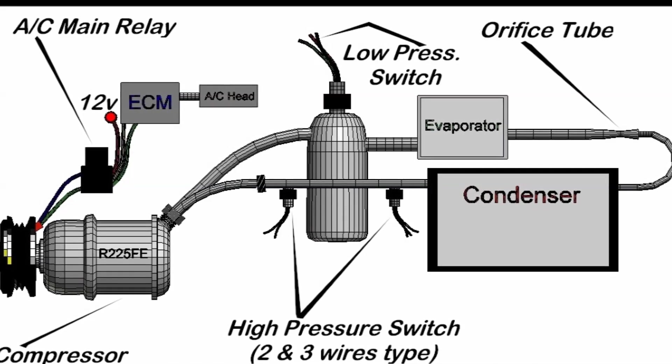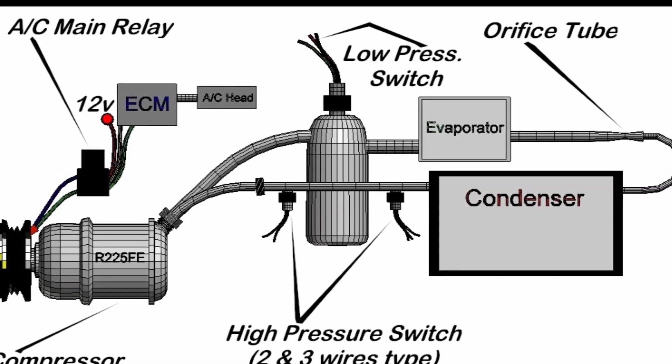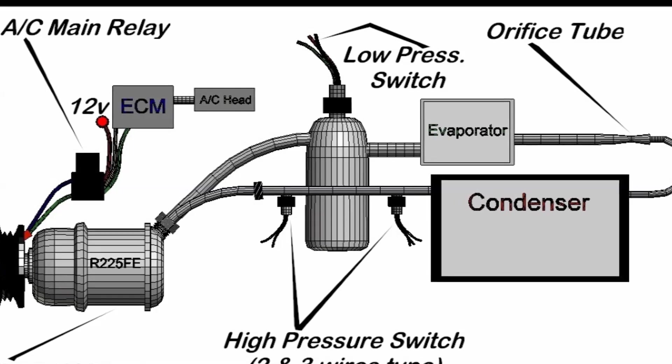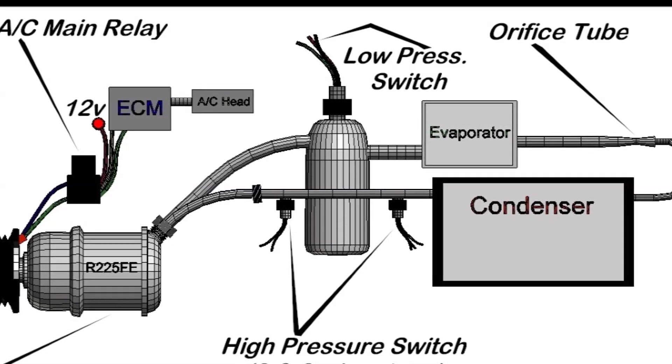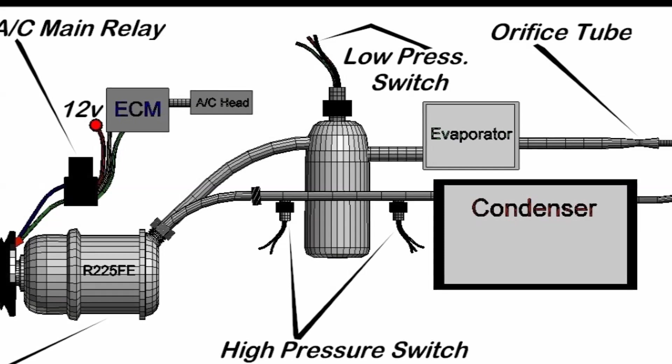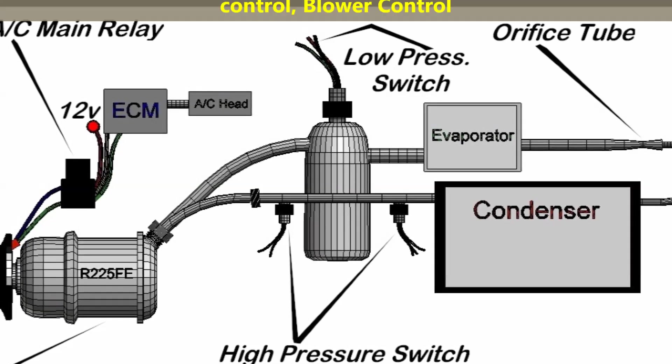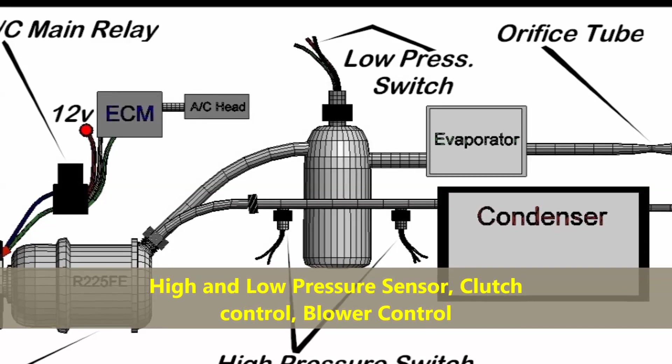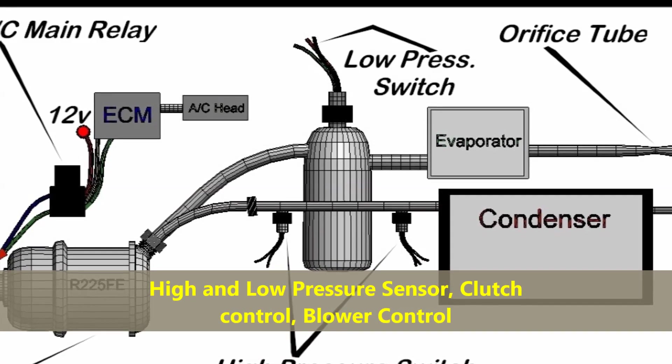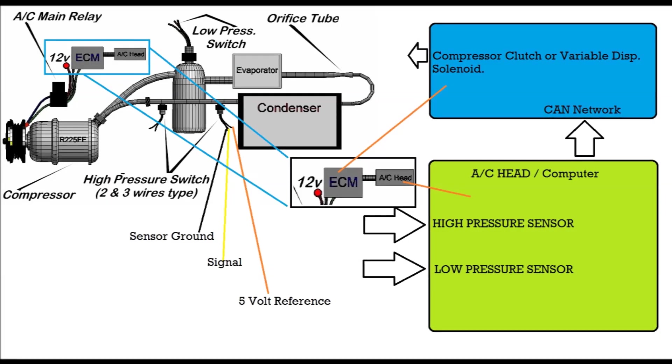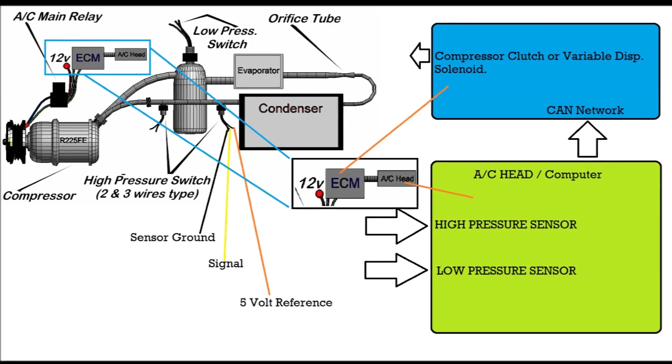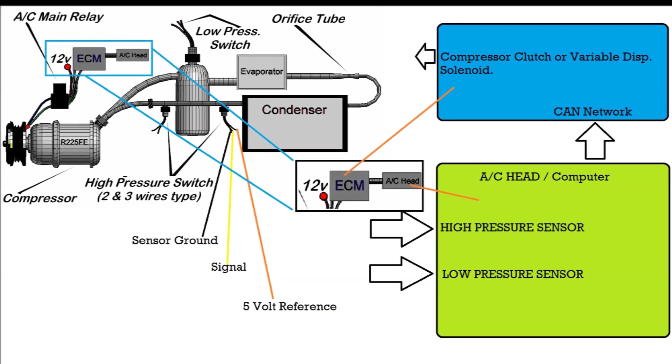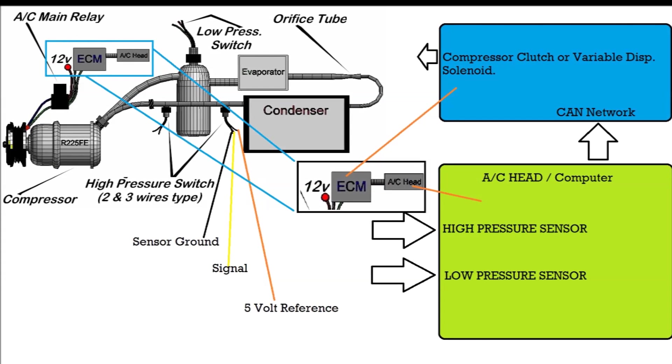In this diagram that you see next, this is a complete diagram. It shows you the ECM, the AC head, which is the AC computer. This particular computer has to do with everything that's related to the automobile. The AC head is usually found, it's the one that has the buttons, that's the actual computer 99% of the time.